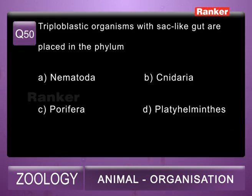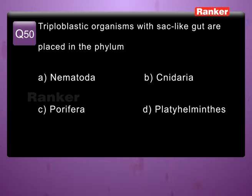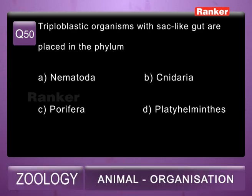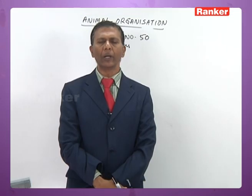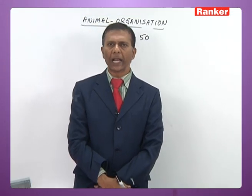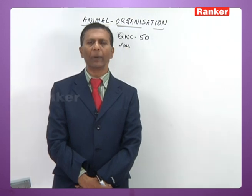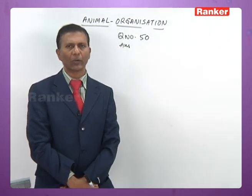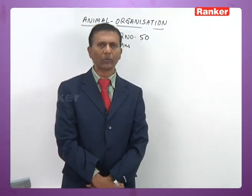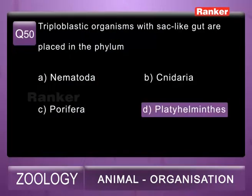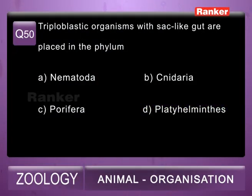Question 50: triploblastic animals with sac-like gut are placed in the phylum A) Nematoda, B) Cnidaria, C) Porifera, D) Platyhelminthes. In Platyhelminthes the gut is sac-like with a single opening — anus is absent, only the mouth is present. So the 50th question correct answer is D, Platyhelminthes.